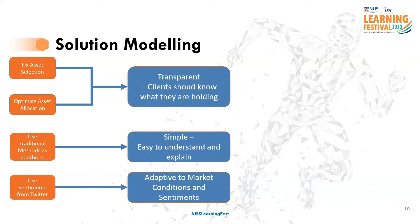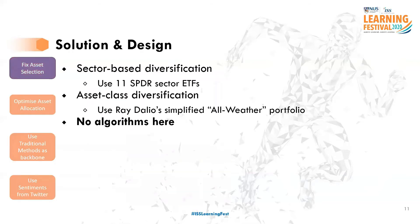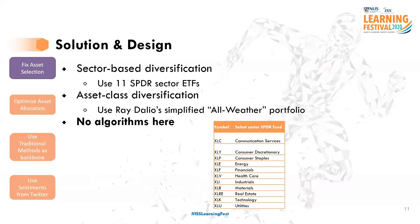In addition, by using sentiments from Twitter, we can potentially gain insight into how the public might trade in the short term in response to certain events and news. Now I'll dive into more details for each of these. I'll start with asset selection. I considered two forms of portfolio diversification: namely sector-based diversification and asset class diversification.